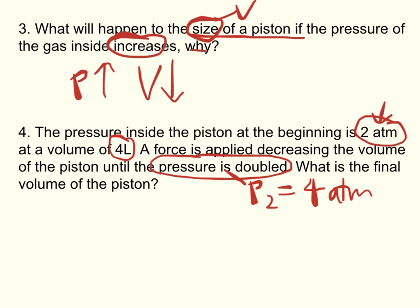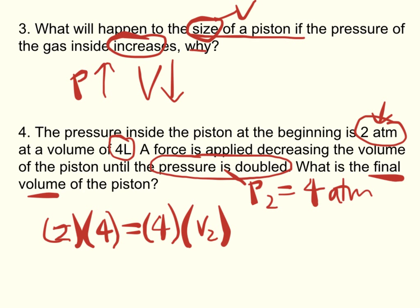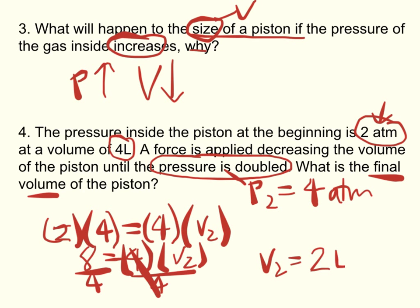We've got to go ahead and plug these values in because we want to figure out the final volume. We have 2 atm P1 times 4 V1 equals P2 4 times our V2. Solve for V2. 8 equals 4 times V2, divide both sides by 4, V2 equals 2 liters.